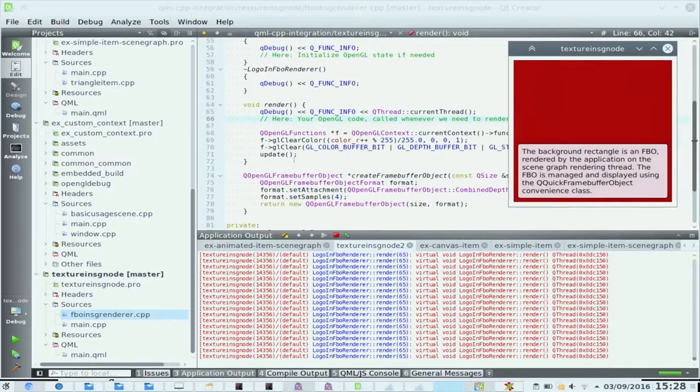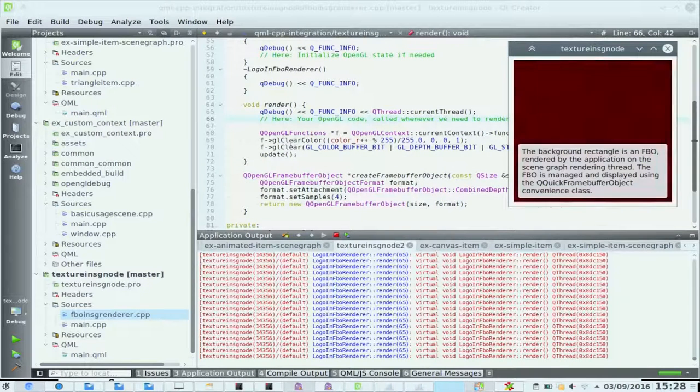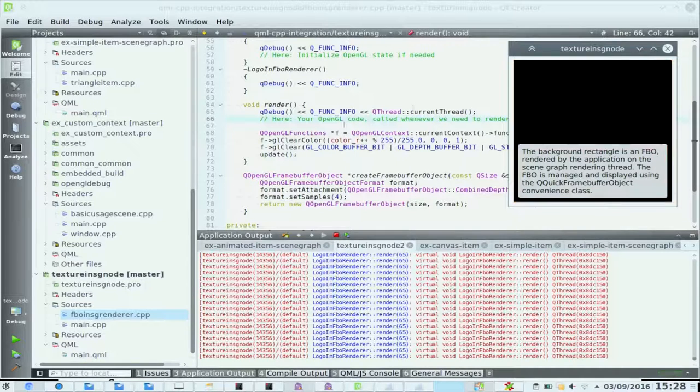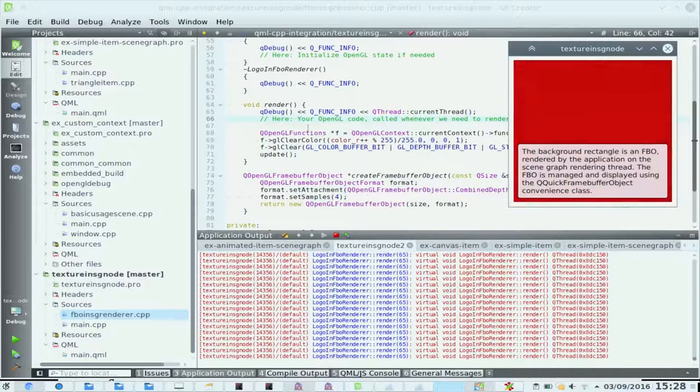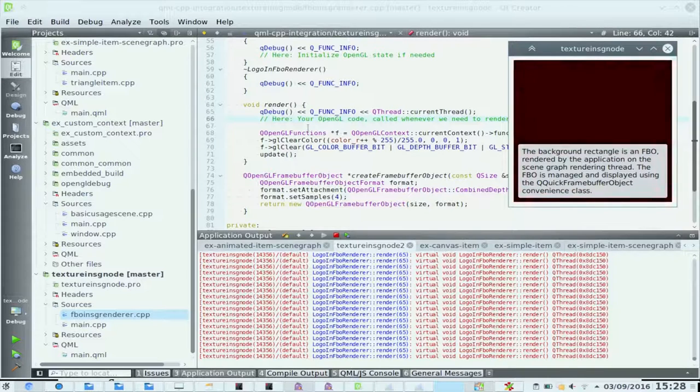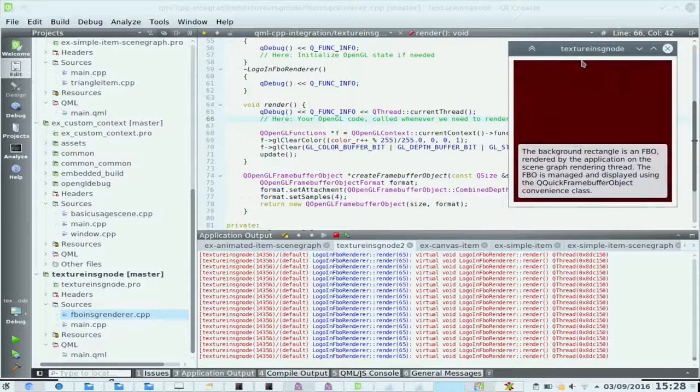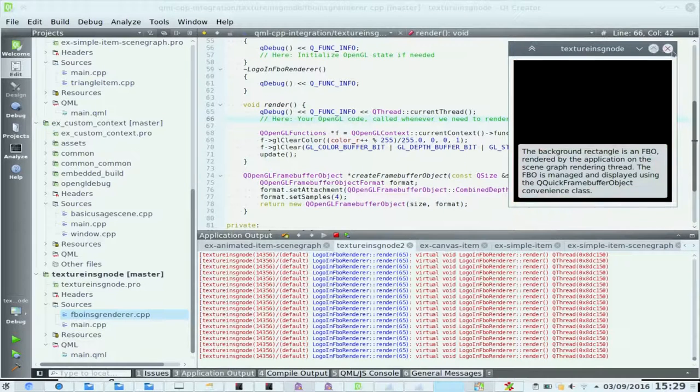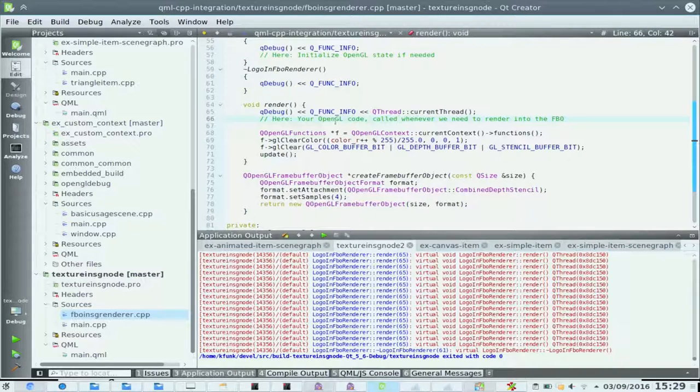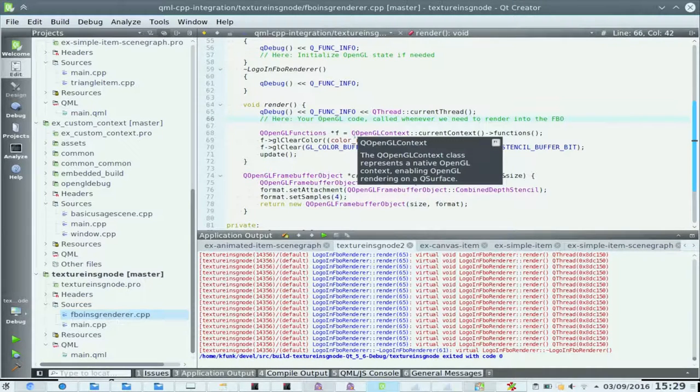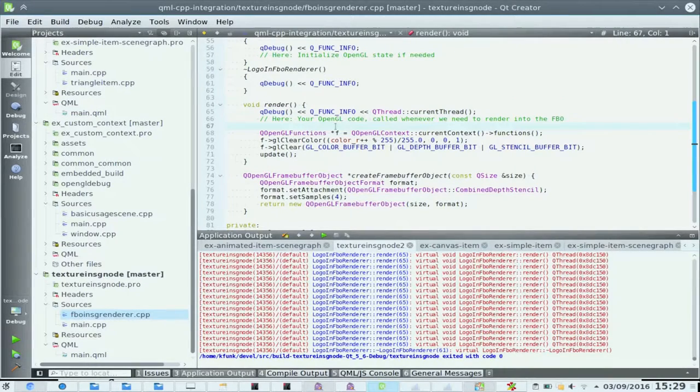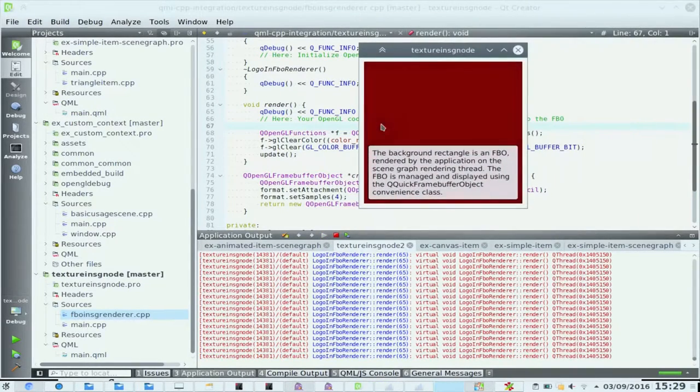We create a new class called LogoInFboRenderer that inherits from QQuickFrameBufferObjectRenderer. We reimplement create frame buffer object down here, which takes care of defining the right format for it. In the render code, you have to pick up this wrapper around OpenGL code called QOpenGL Context Current Context Functions. This one is used so you don't nail yourself on a specific OpenGL version. We're keeping it pretty simple here. We just clear the color, set it to a specific color and clear after us.